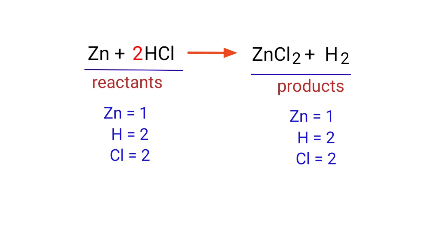The equation is now balanced. There are 1 Zinc atom, 2 Hydrogen atoms, and 2 Chlorine atoms on both sides.